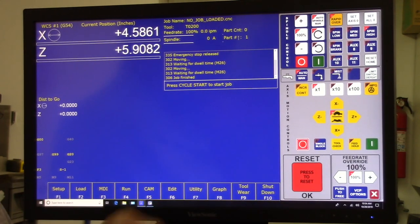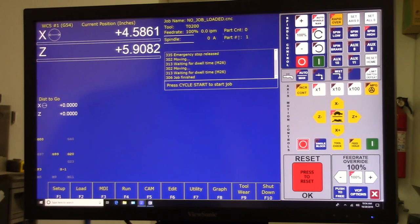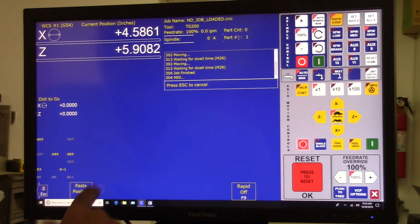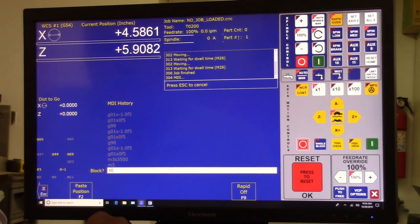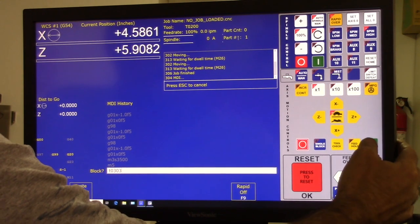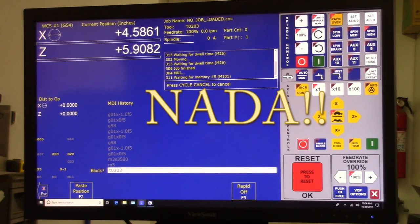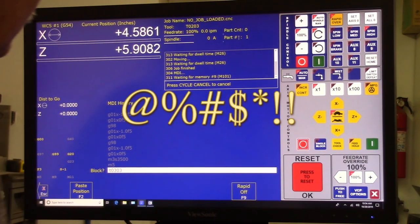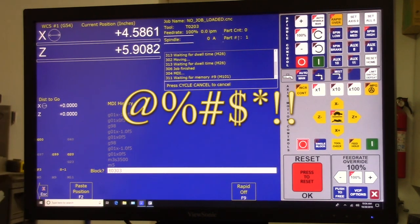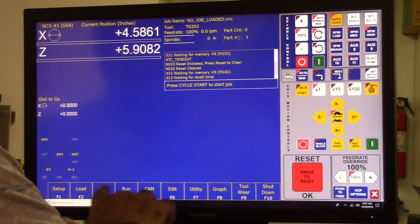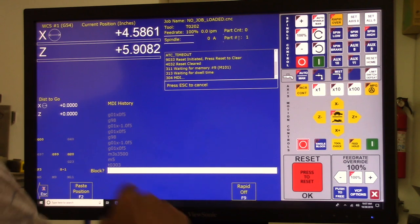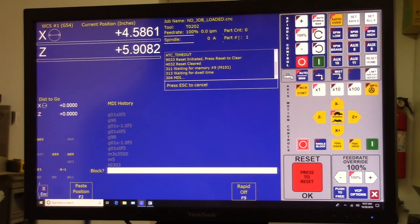Let's go ahead and command the tool change. So we'll go to MDI. And we'll do a T-0-3-0-3. And we're going to do a cycle start. A minute ago, I was calling T-0-3. Go in here to MDI. And you see it's still sitting there. Tool three. And it didn't rotate. Nothing happened.